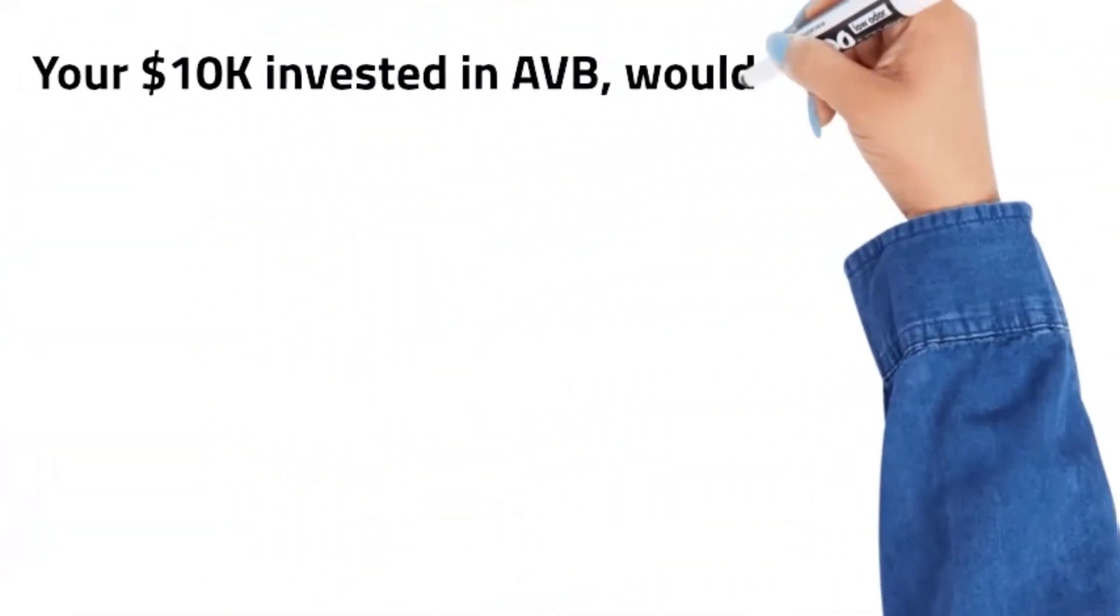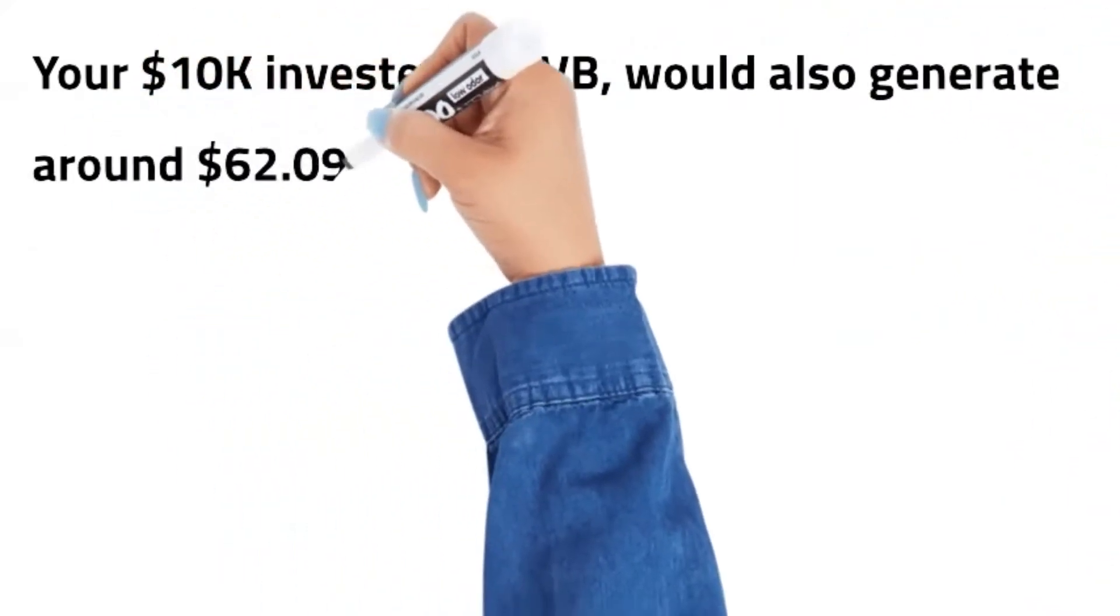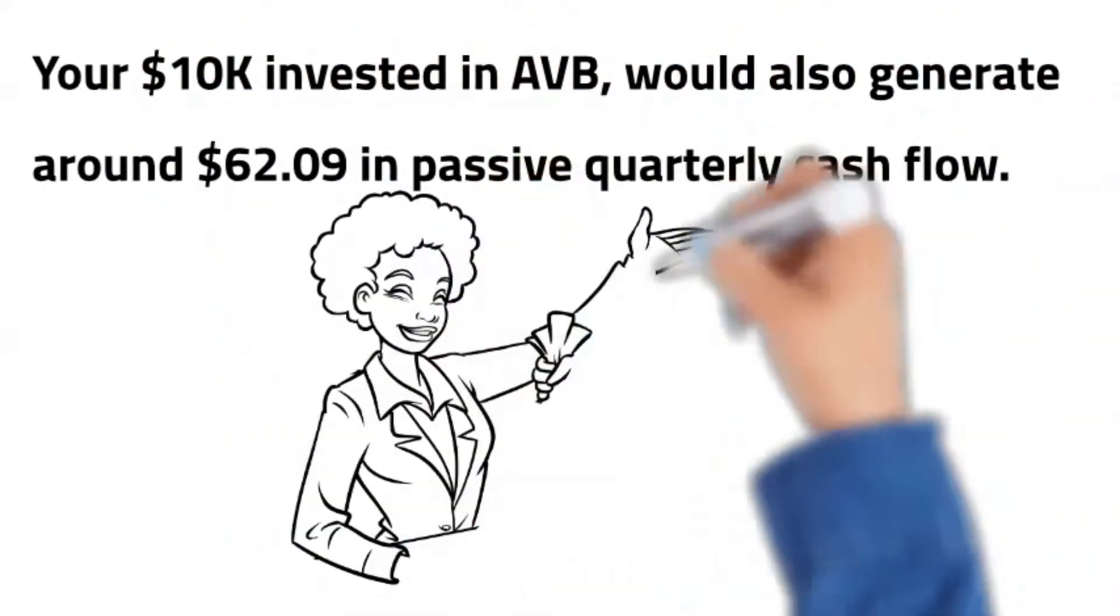Your $10,000 invested in AVB would also generate around $62.09 in passive quarterly cash flow.